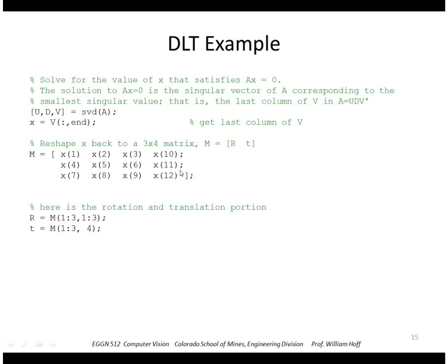In MATLAB, here's where we take the SVD of A to produce those matrices. Here's where we pull out the rightmost column of V, put that into x. Here's where we take those 12 elements of x and put that back into a 3 by 4 matrix we'll call M. This 3 by 3 matrix is the rotation portion of the matrix, and this vector here is our translation vector.